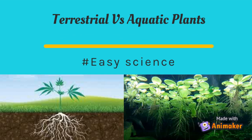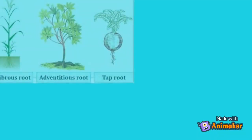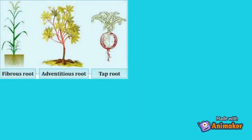Terrestrial versus aquatic plants, by Easy Science. Hello kids, in this video I will tell you about terrestrial and aquatic plants. Terrestrial plants are found in soil-based environments. They have a strong root system that can either be a